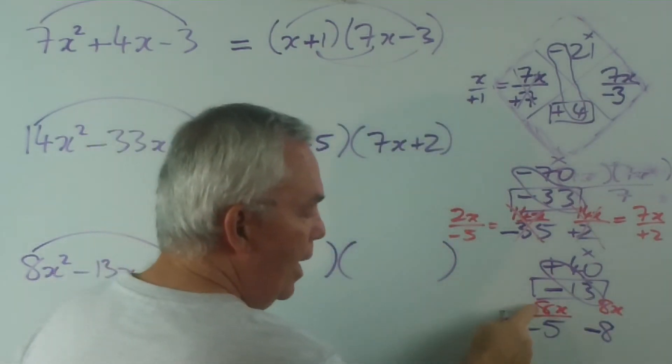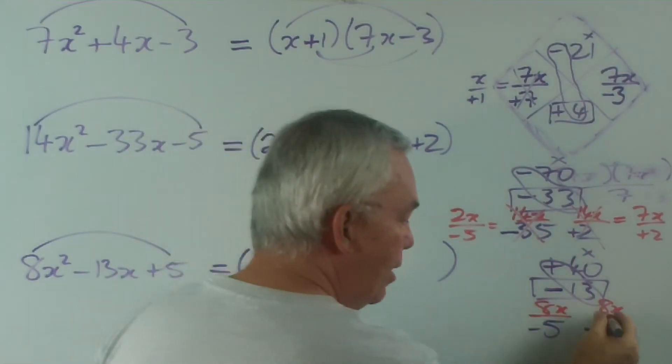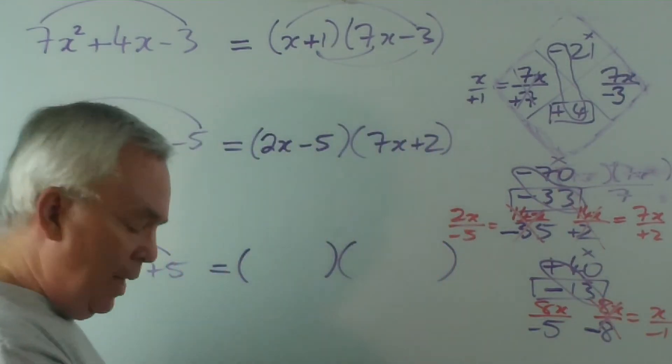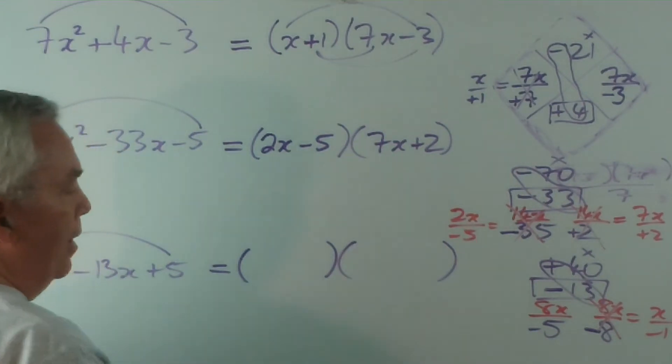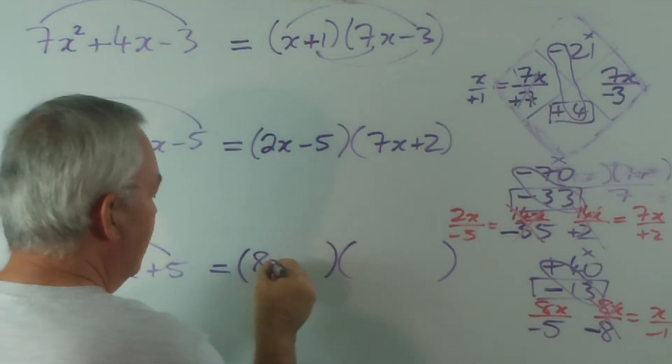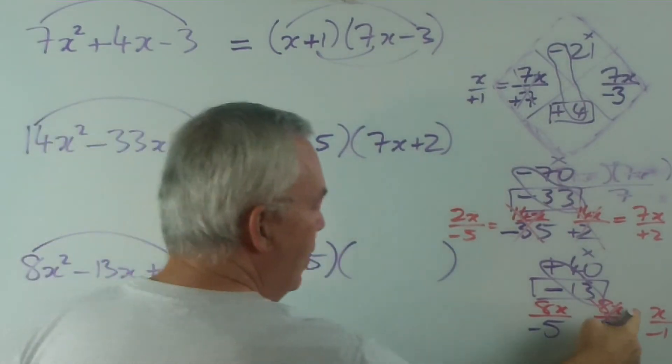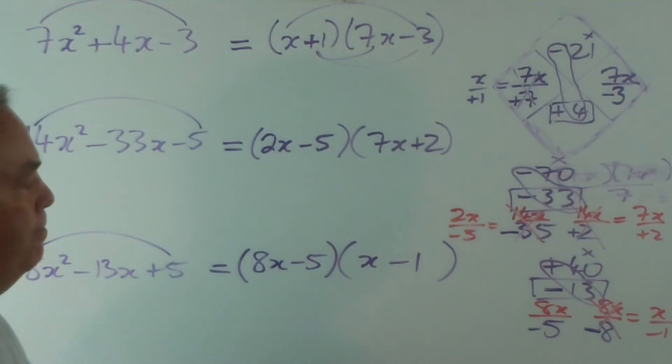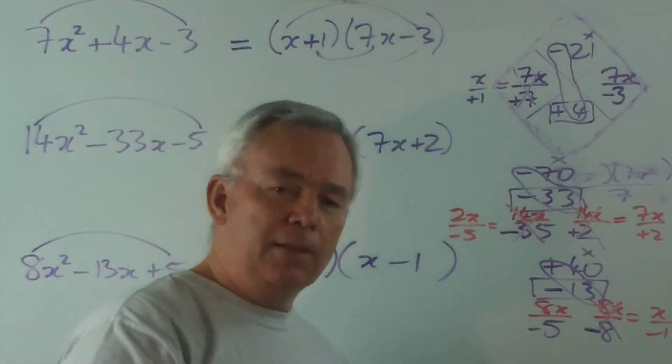Now this side we cannot simplify, but this side we certainly can. 8 divides into both of them and gives me x over -1. And that means that my factors are 8x-5 and x-1. A lovely little technique.